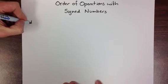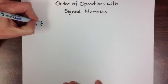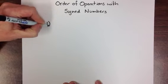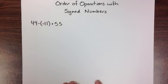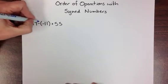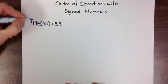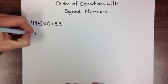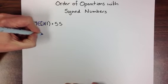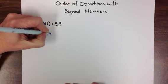The first problem we're going to look at is 44 minus a negative 11 plus 55. Our first step is to deal with this double negative sign right here, by taking those two negatives and making a positive. So this new problem becomes 44 plus 11 plus 55.